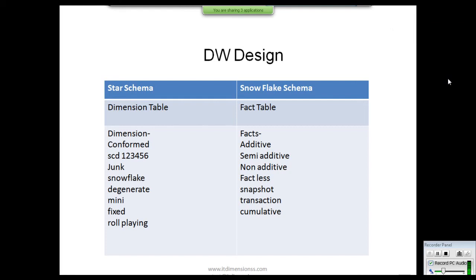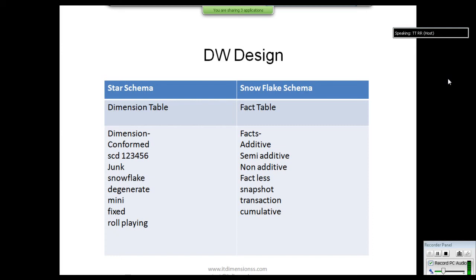Of the SCD categories, SCD Type 1, Type 2, and Type 3 are the most important. There are also different kinds of fact tables: additive, semi-additive, non-additive, and factless fact tables. Broadly, fact tables are classified into snapshot, transaction, and cumulative types. A data warehouse designer selects the appropriate tables based on requirements.